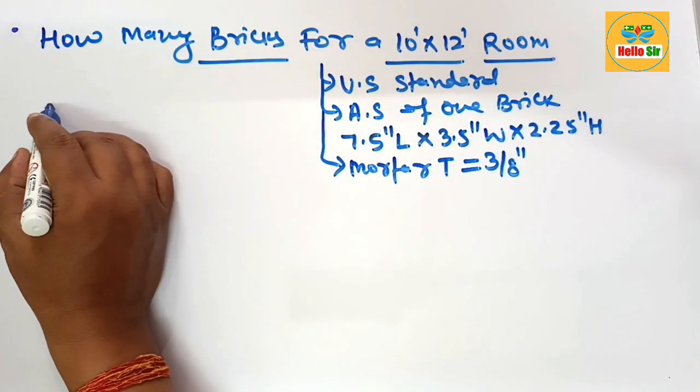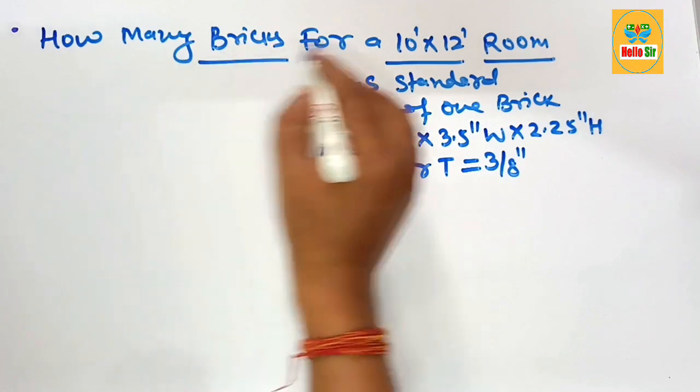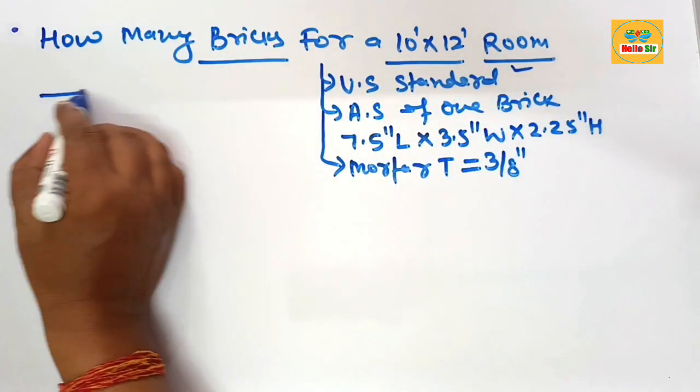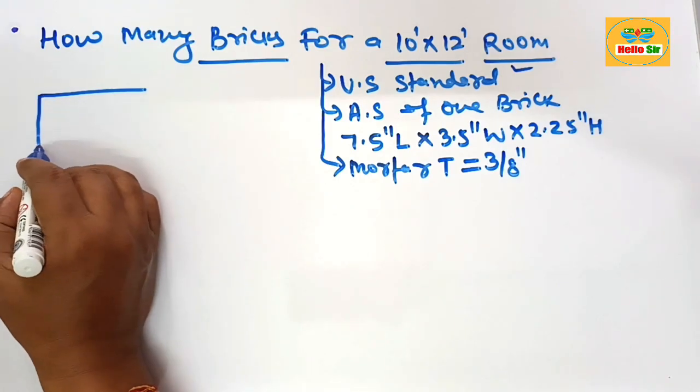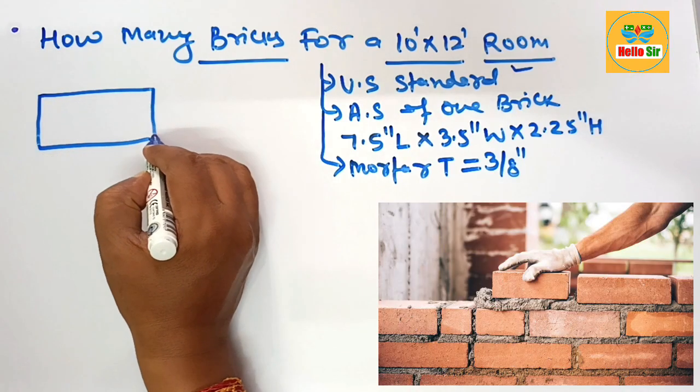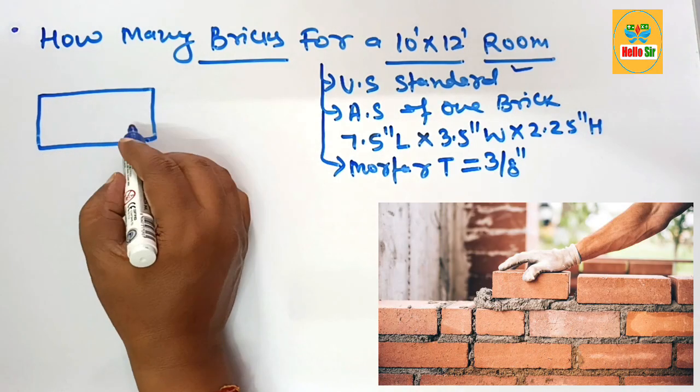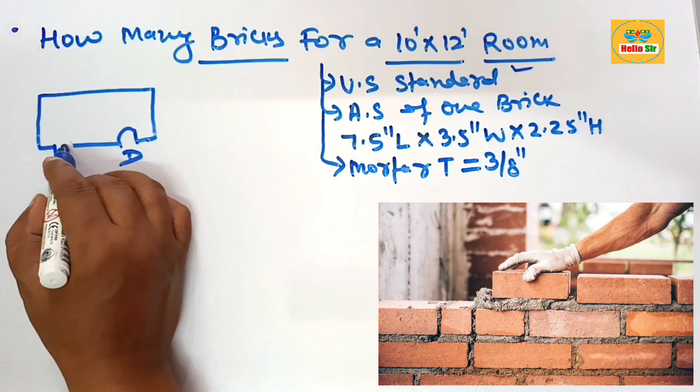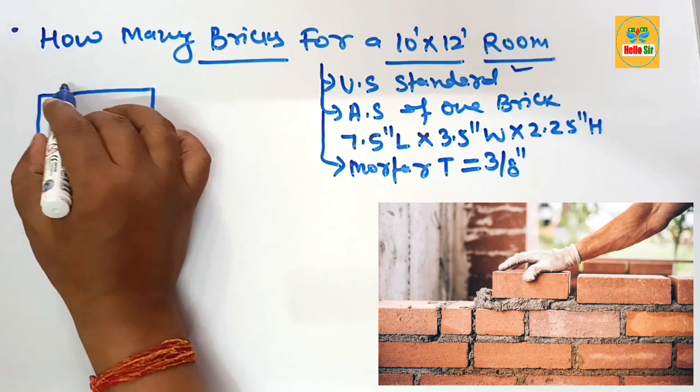Now let's understand the dimensions of the room, which is 10 by 12 feet. Suppose this is the rough size of the room with one door, one window, and one vent.